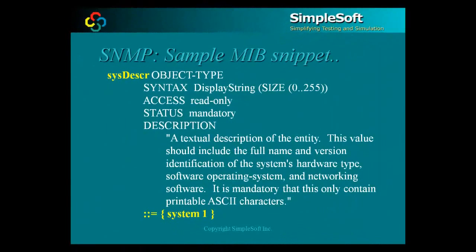The object type or class definition of an object specifies its syntax, its access clause, its description, and its place in a larger registration tree. The place where it fits in the registration tree determines a part of its name.